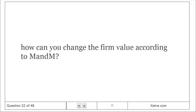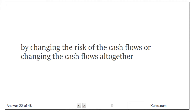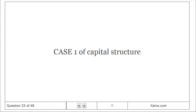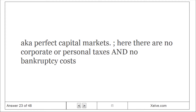How can you change the firm value according to M&M? By changing the risk of the cash flows or changing the cash flows altogether. Case 1 of capital structure, also known as perfect capital markets: here there are no corporate or personal taxes and no bankruptcy costs.